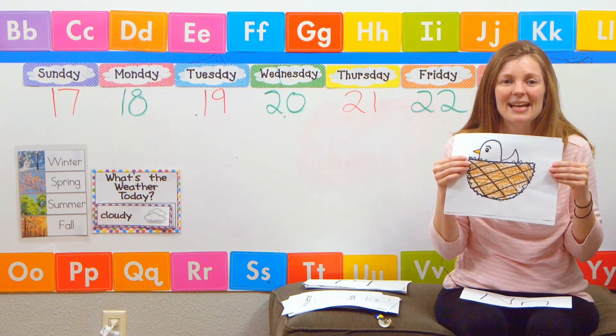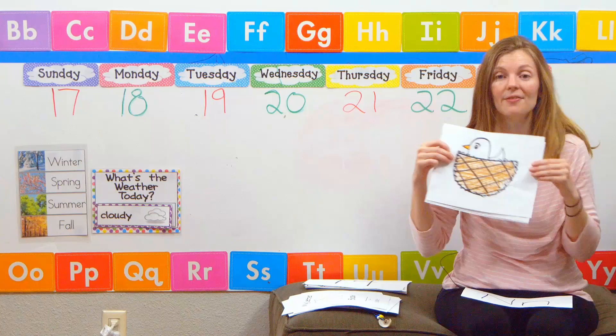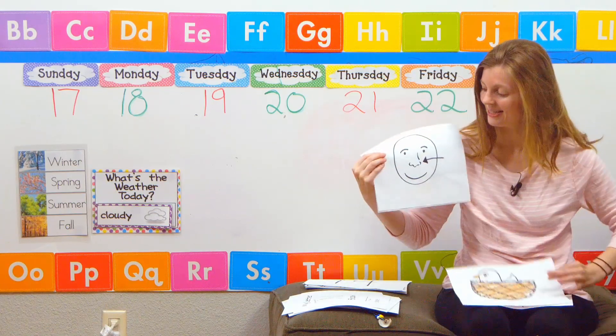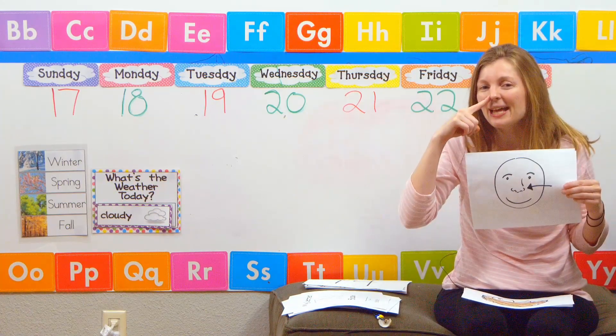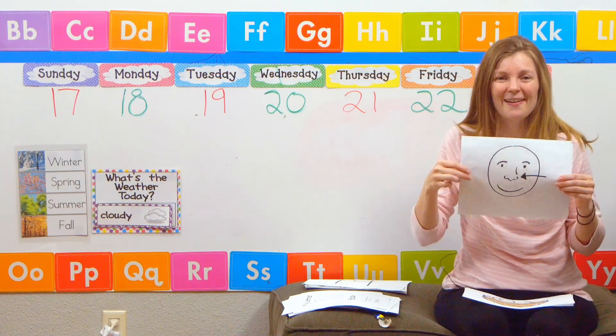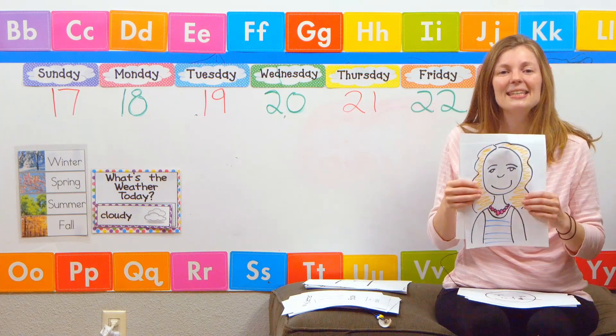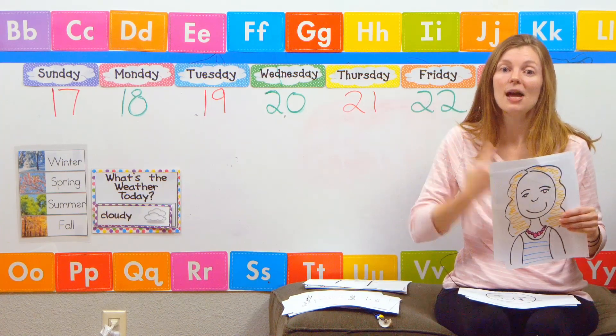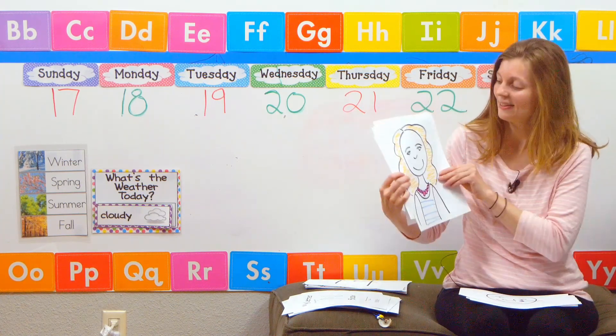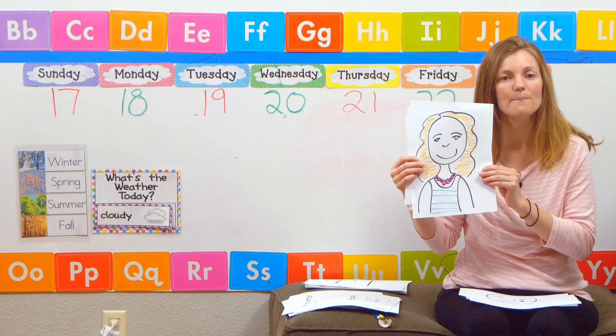And N is for na na nest. And I have a little bird in my nest today. N is for na na nose. I have a nose. Do you have a nose? N is for na na necklace. Sometimes I wear a necklace. Looks like this little girl is wearing a pink necklace.